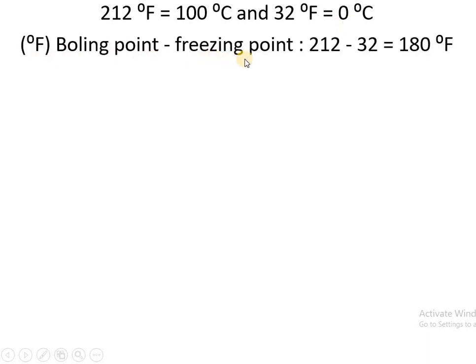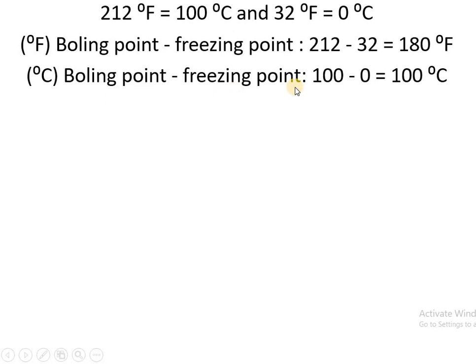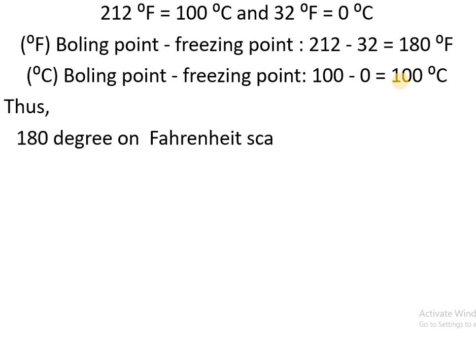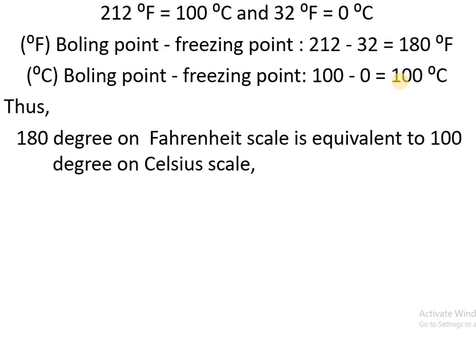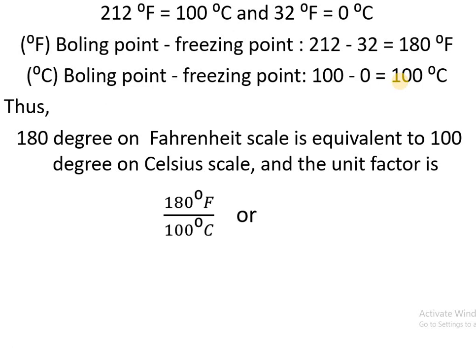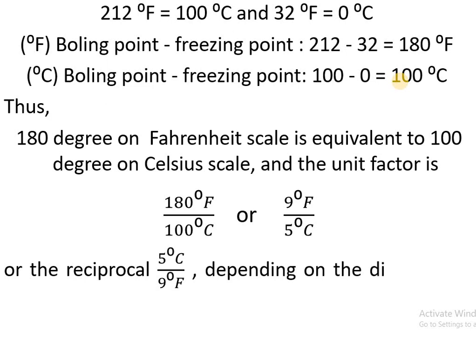The difference between the boiling point and freezing point in degree Fahrenheit is 180 degree Fahrenheit, while in degree Celsius it is 100 degree Celsius. Therefore, 180 degrees on the Fahrenheit scale is equivalent to 100 degrees on the Celsius scale. The unit factor is 180 degree Fahrenheit divided by 100 degree Celsius, or 9 degree Fahrenheit divided by 5 degree Celsius. The reciprocal, 5 degree Celsius divided by 9 degree Fahrenheit, is used depending on the direction of conversion.